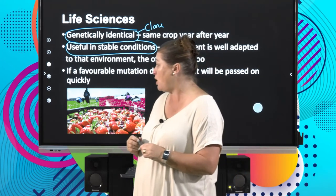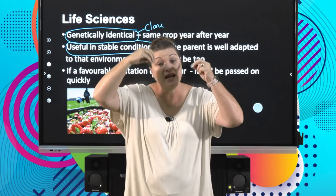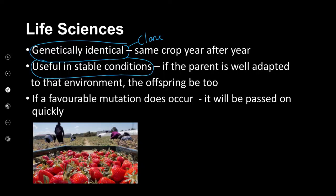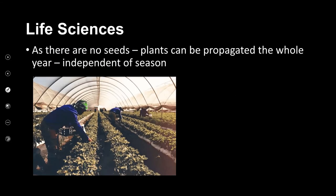What happens is that if a change does occur, and there is a favorable mutation — if maybe by some chance during mitosis something goes wrong but it's a good something — that mutation is going to be passed on very quickly, because the process of mitosis is going to start making identical copies with that really good trait.